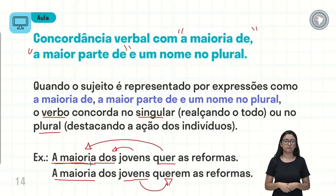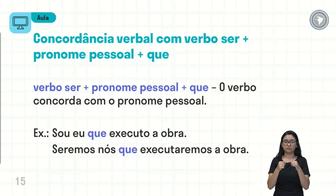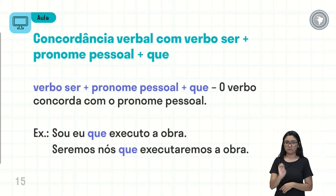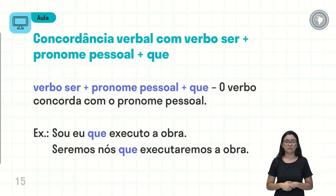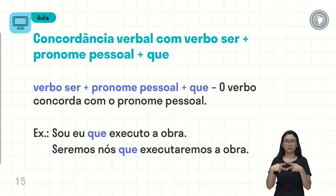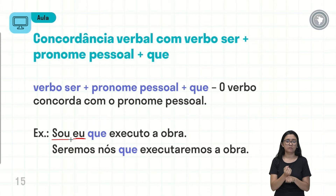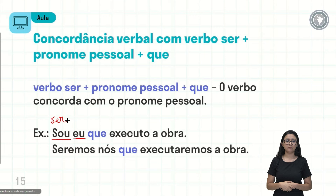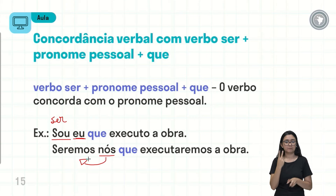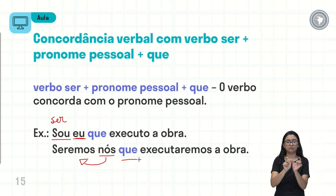Concordância verbal com o verbo 'ser' mais pronome pessoal mais 'que': o verbo concorda com o pronome pessoal. Exemplo: 'sou eu que executo a obra' — pronome 'eu', verbo 'ser' na primeira pessoa do singular. 'Seremos nós que executaremos a obra' — primeira pessoa do plural. O pronome 'que' é um item que vai acompanhar essa estrutura.